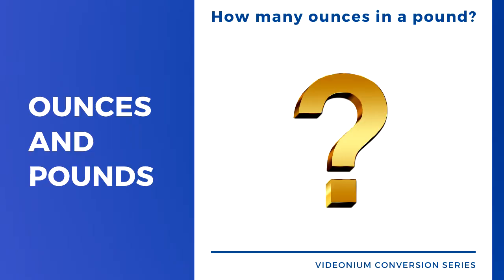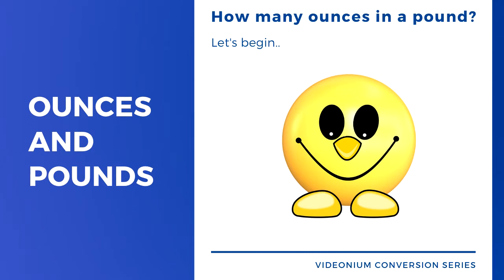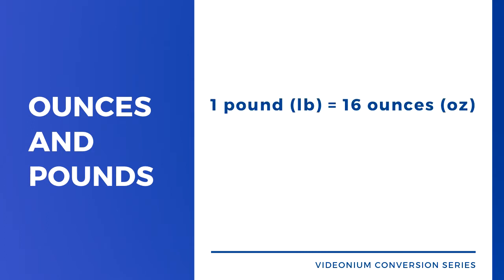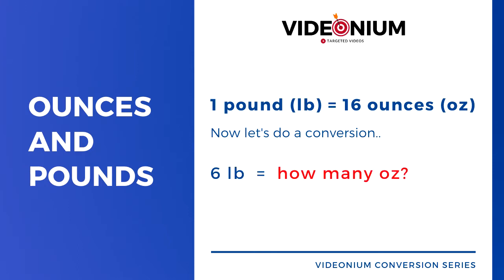Let's see how to convert pounds into ounces, and vice versa. How many ounces in a pound? Let's begin. One pound is equivalent to 16 ounces. So now let's do a quick conversion.